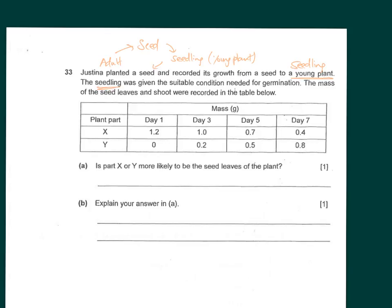The seedling was given suitable conditions needed for germination. Germination is the process in which the seed develops into a young plant. The conditions required are very similar to what any living thing requires — the AFW we talked about — except it doesn't require food. Instead, the conditions are: air, warmth, and water (AWW). The plant gets its food from the seed leaves.